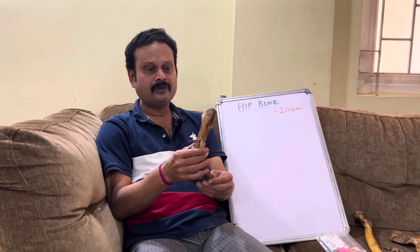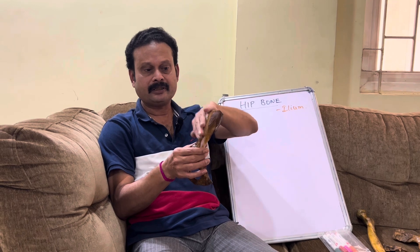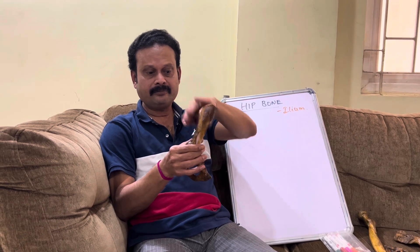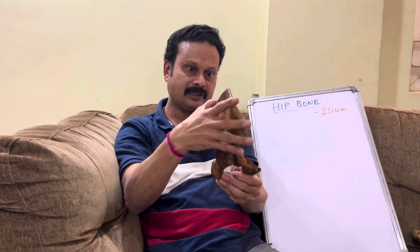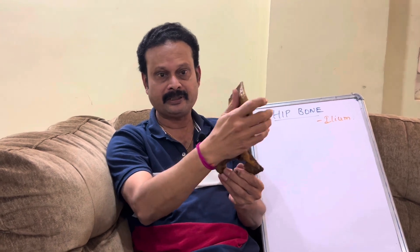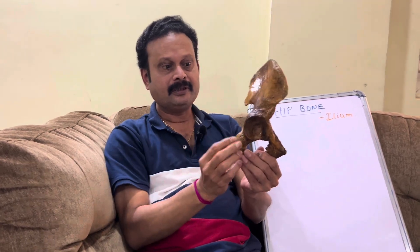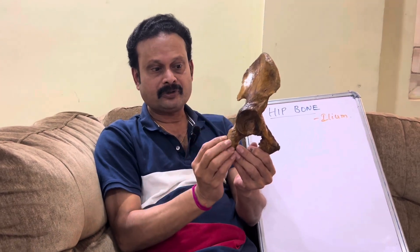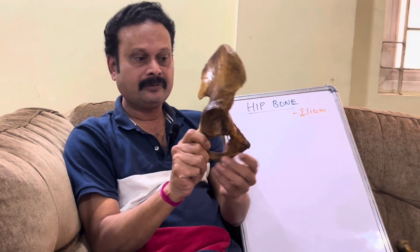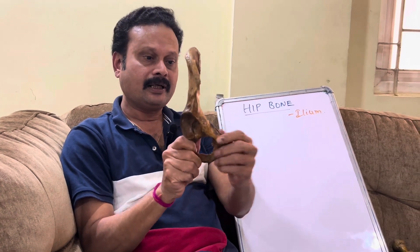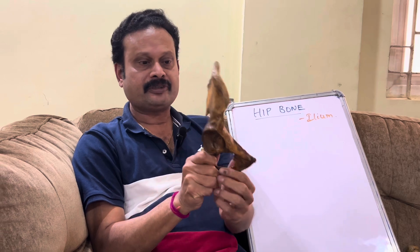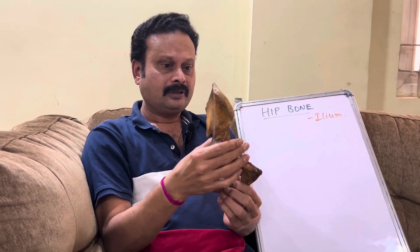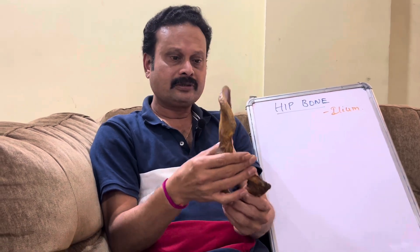This hip bone is made up of three parts: ilium, ischium, and pubis. It is a mixture of three bones — the upper expanded part being the ilium, the lower posterior wider part being the ischium, and the lower anterior part being the pubis. These are paired bones.